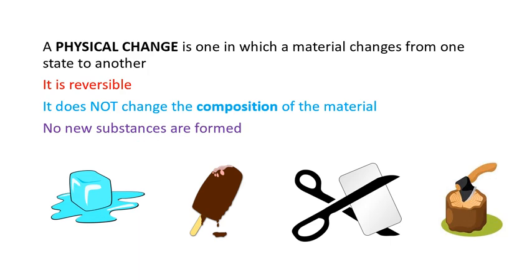A physical change is one in which a material changes from one state to another. It is reversible. It does not change the composition of the material, and no new substances are formed.